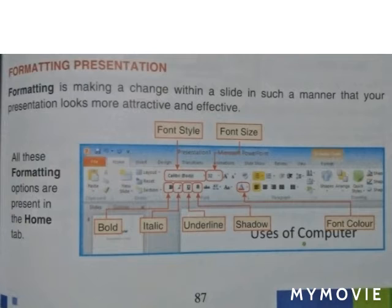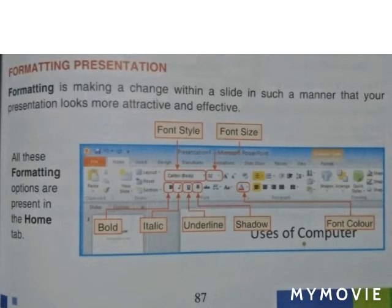Bold makes our text strong and ticker. Italic, underline, and text shadow — to give shadow on our text, we can click on S. Font color is used to change the color of our text. The default color is black, but if you want to change it to blue or red, you can use the font color option.